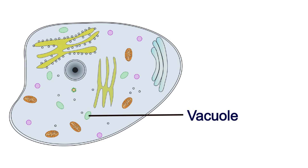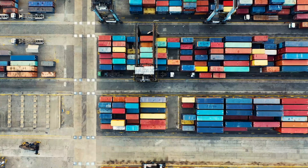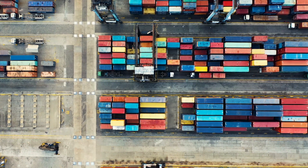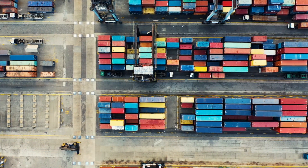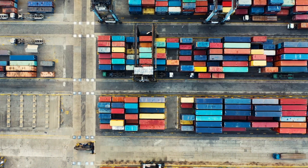The next stop of our tour of cell city is the vacuole. This is the city storage. Not only does it store resources needed for the city, but it also stores waste produced by the city.